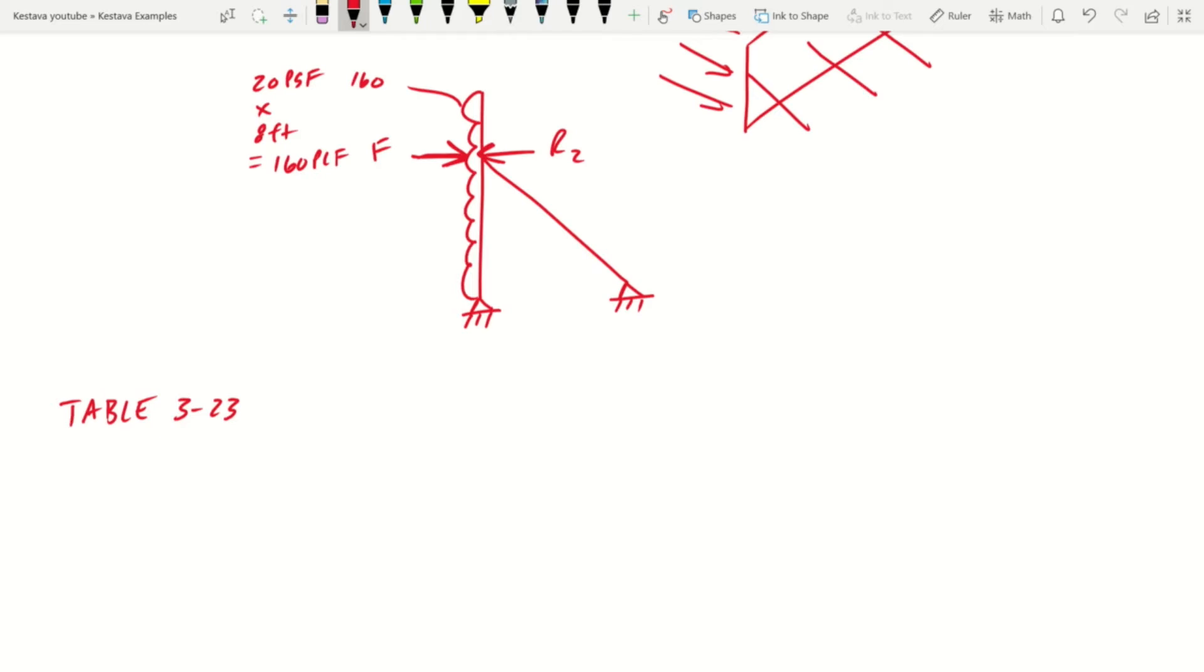So table 3-23, shears, moments and deflection equations. And we're going to go to page 3-221, and we're going to go to the beam overhanging one support scenario, which looks like some pin supports with an evenly distributed load on it.